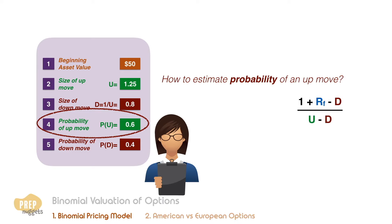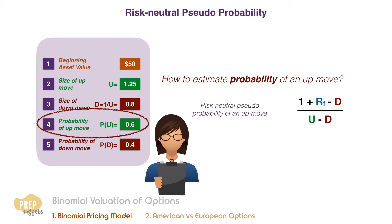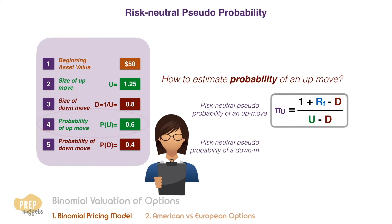This probability is not the actual probability of an up move. It's known as the risk-neutral pseudo-probability of an up move and is commonly denoted with the symbol pi. The pseudo-probability of a down move, pi D, is simply 1 minus pi U.